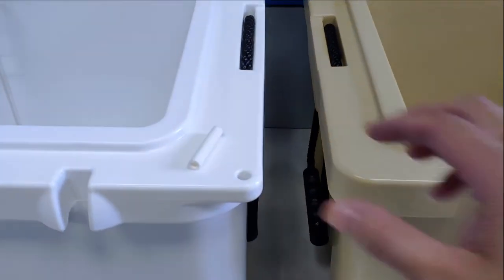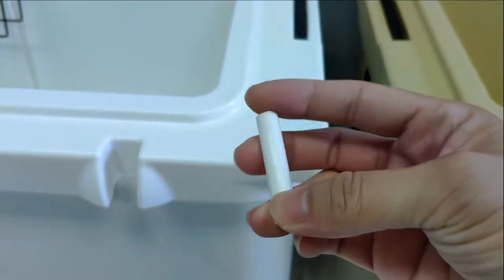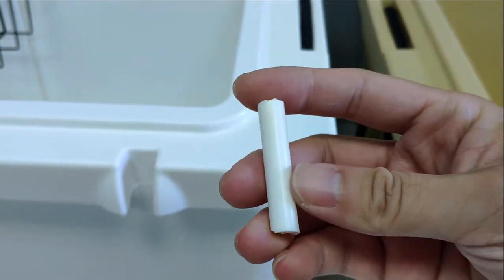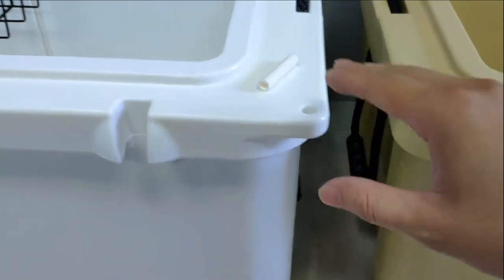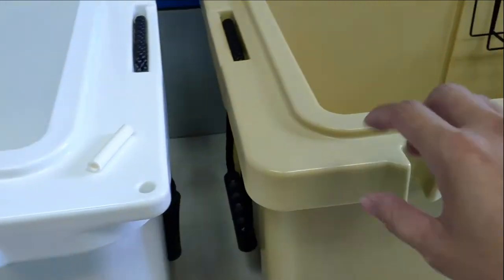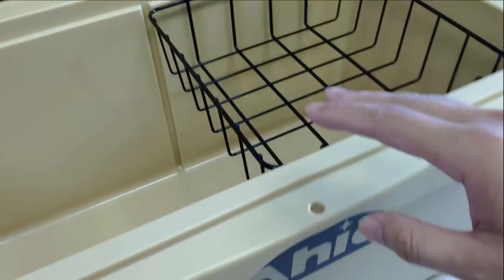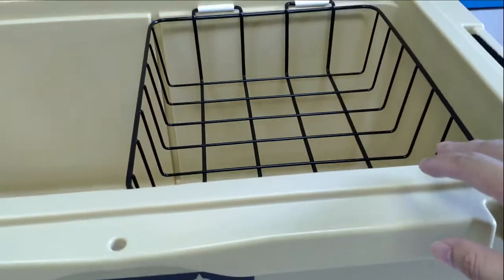So the idea I came up with is I got some 3/8 tubing, sliced them down the middle. And what you want to do is when you get your 3/8 tubing, make sure you get the softest one so it kind of molds to the size of the cooler and it gets a better grip.